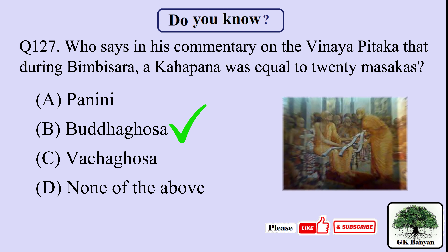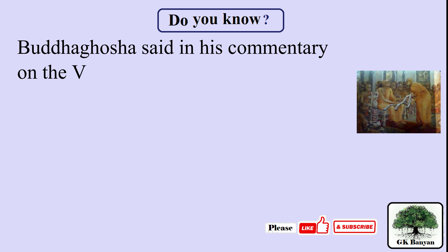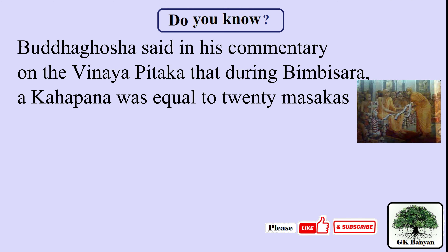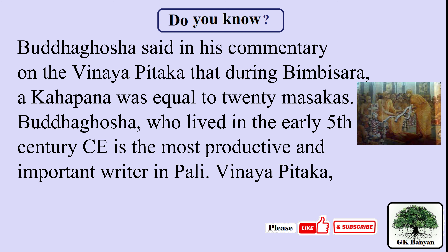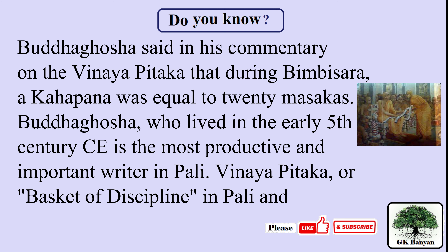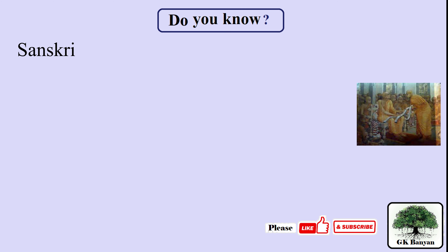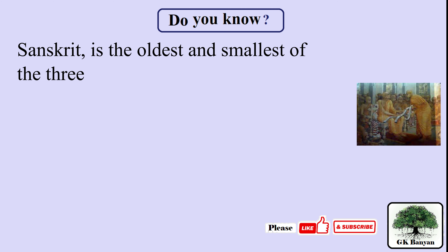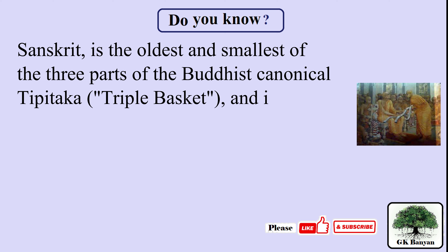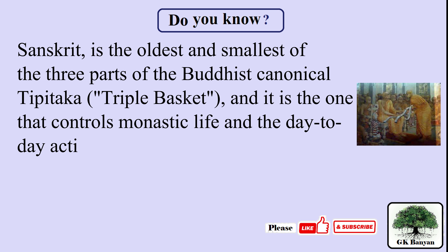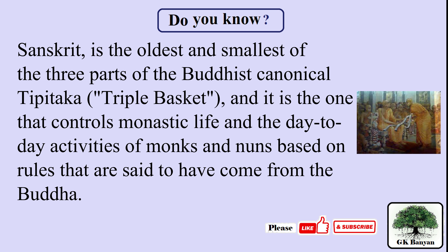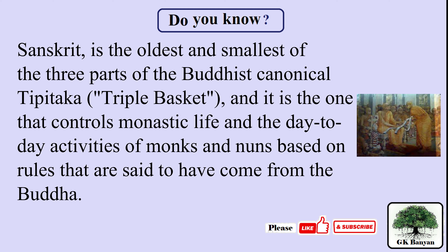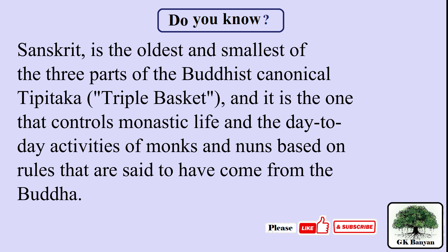The right answer is B. Buddhaghosa. Buddhaghosa said in his commentary on the Vinaya Pitaka that during Bimbisara, a Kahapana was equal to 20 Masaka. Buddhaghosa, who lived in the early 5th century CE, is the most productive and important writer in Pali. The Vinaya Pitaka, or Basket of Discipline, is the oldest and smallest of the three parts of the Tripitaka, controlling monastic life and the day-to-day activities of monks and nuns based on rules said to have come from the Buddha.